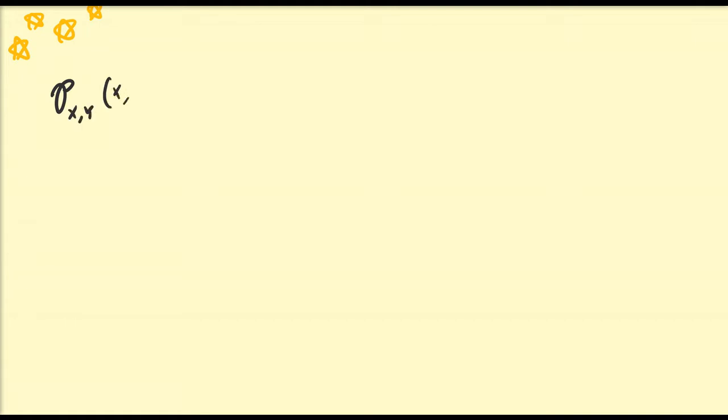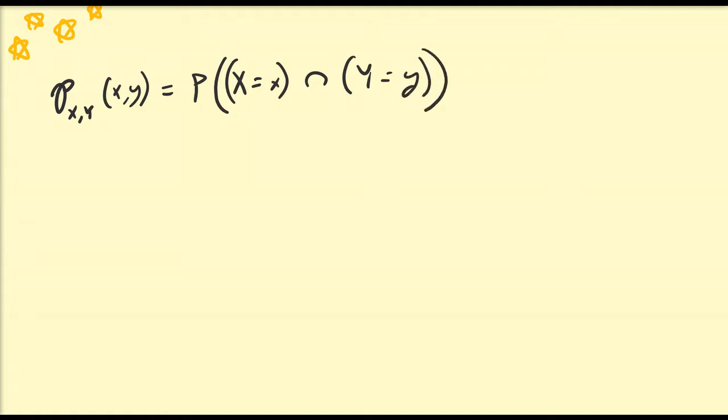Hello there. In this video we're going to continue our discussion of probability joint mass functions. A joint probability mass function — probability of x and variable y with values x and y — is defined to be equal to the simple probability that x equals x and y equals y. We're going to discuss this function together with its marginal probability mass functions and talk about how to calculate the expectation and variance of x and y from the joint PMF and its marginal PMFs.